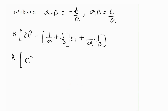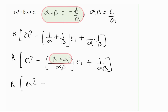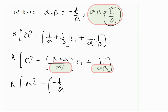Taking alpha·beta as the LCM, the sum 1/alpha + 1/beta becomes (alpha + beta)/(alpha·beta). Replacing alpha + beta with minus b over a, and alpha·beta with c over a, we get (minus b/a) divided by (c/a), which equals minus b/a times a/c, giving minus b/c. The product of reciprocal zeros is 1/(alpha·beta) = a/c.